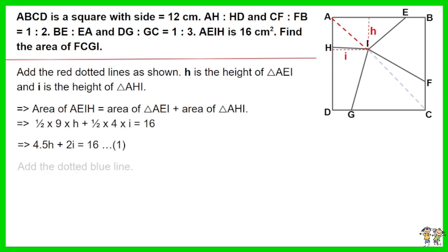Add the dotted blue line. Area of FCGI equals area of triangle CFI plus area of triangle CIG.